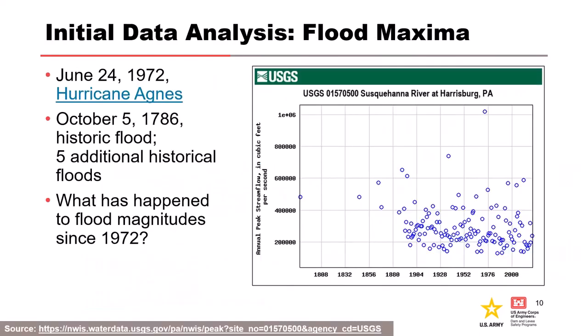Here's the first example: the Susquehanna River at Harrisburg, Pennsylvania. Just based on visual inspection — if you were looking at this data set and going to come up with an inflow volume frequency curve — what's the first thing you see that's a little bit weird about this data?